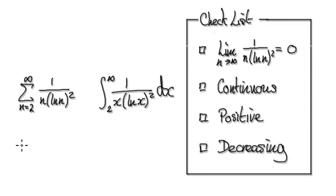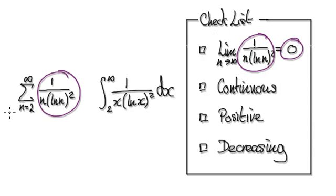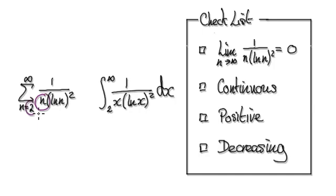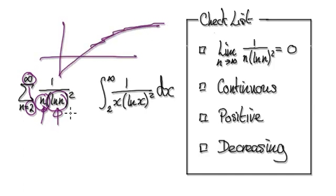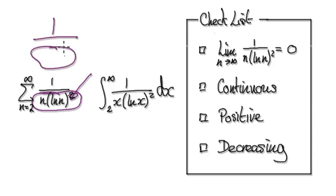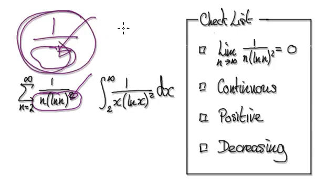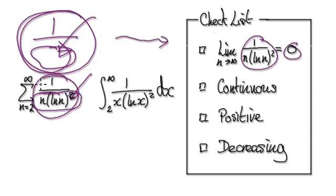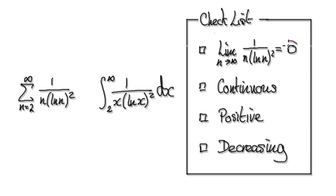The first thing is to check that the limit of this heads towards 0 as n travels from 2 to infinity. As n gets bigger and bigger towards infinity, natural log is just going to get bigger and bigger — the whole denominator will just get bigger and bigger. So 1 divided by something that keeps growing, the whole thing will head towards 0. So the limit is indeed 0.